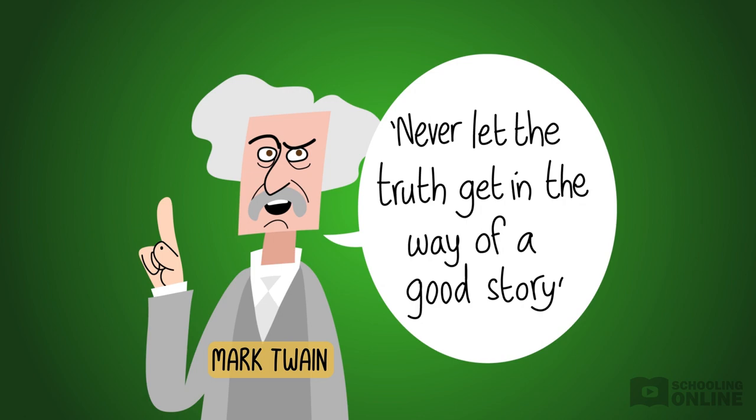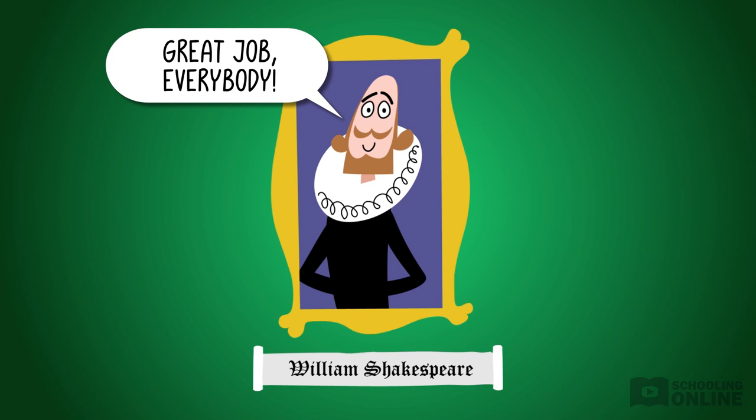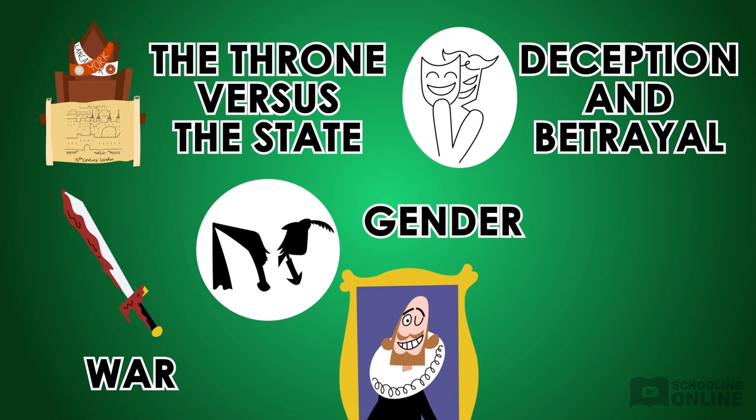Great job! In this lesson, we've covered how aspects of Shakespeare's context are reflected in his dramatic portrayal of the throne versus the state, war, deception and betrayal, gender, and the pursuit of power in Richard III. You're now ready to write awesome paragraphs and make Shakespeare proud.